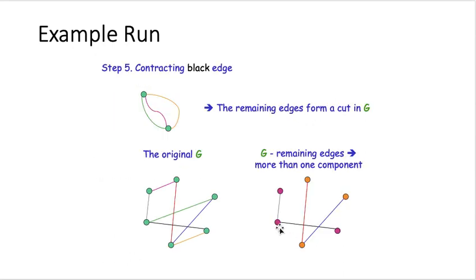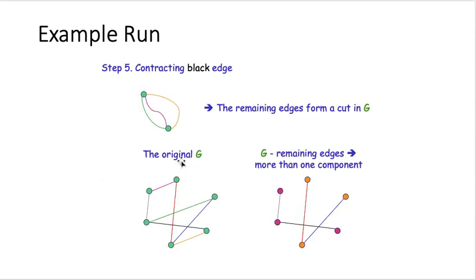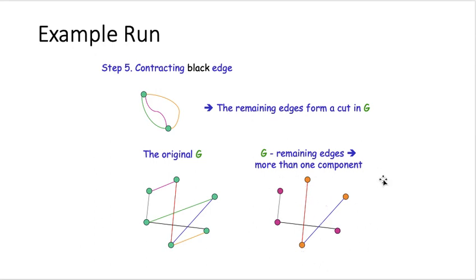In one more step, we contract the black edge, and the orange edge moves accordingly. The resulting graph now has exactly two nodes. At this point, we exit the while loop and output the remaining edges: the green one, the pink one, and the orange one. Going back to the original graph, if we remove these three edges — orange, pink, and green — the graph becomes disconnected.